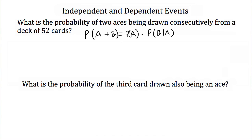The probability of A is the probability of the first ace being drawn. There are four aces in the deck, so that probability is 4 out of 52. Once that ace is drawn, there's one less ace and one less card in the deck. So the probability of B given A — the probability of getting the second ace — is 3 out of 51, because there are only three aces left and only 51 cards left in the deck. Multiplying these together gives us 12 over 2,652.